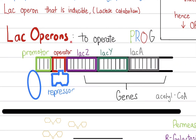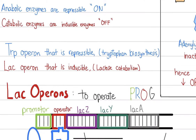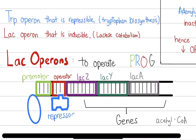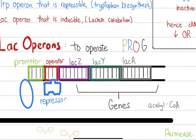Let's get into the lac operon. A helpful mnemonic is PROG — you're making progress. P stands for the Promoter region, R for the Repressor, O for the Operator, and G for the Genes. These are the parts of the operon. Lac means lactose, operon means to operate. Since lactose needs to be broken down, it's catabolism, and therefore its enzymes will be inducible.